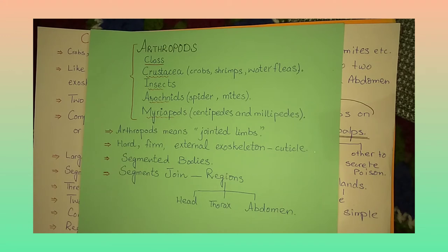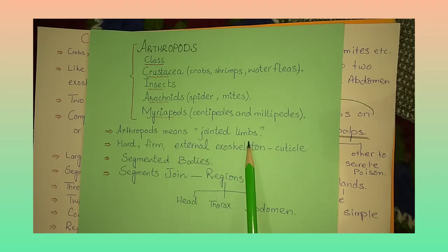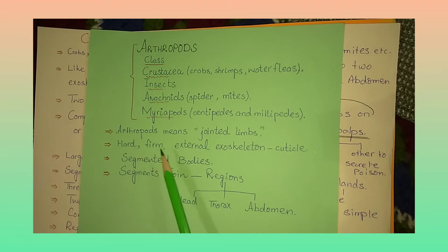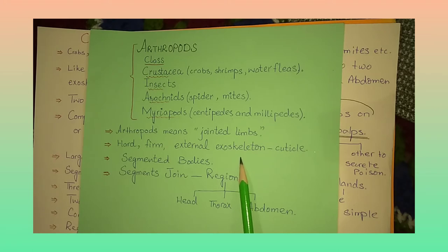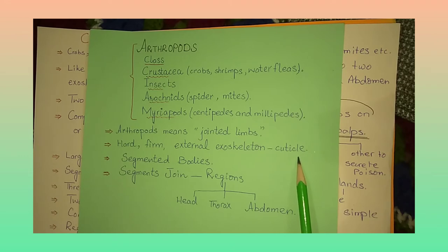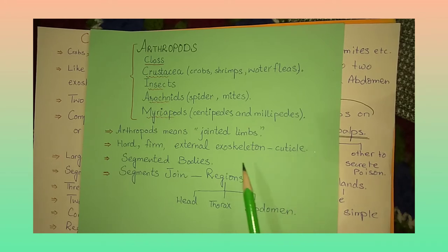Now we should know what arthropods are and what kind of organisms are classified into them. Arthropods basically means jointed limbs — they are jointed-limb organisms. They have a hard external exoskeleton. The exoskeleton has two kinds: endo, meaning internal, and exo, meaning external. The external exoskeleton is known as the cuticle — a firm outer layer or body covering.